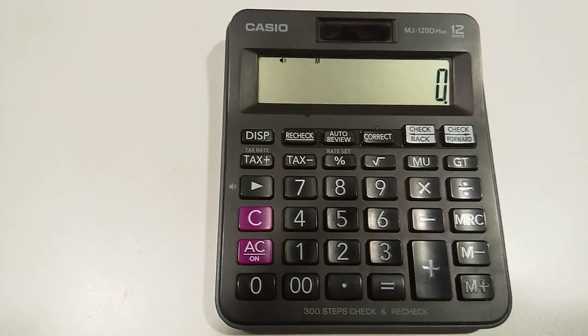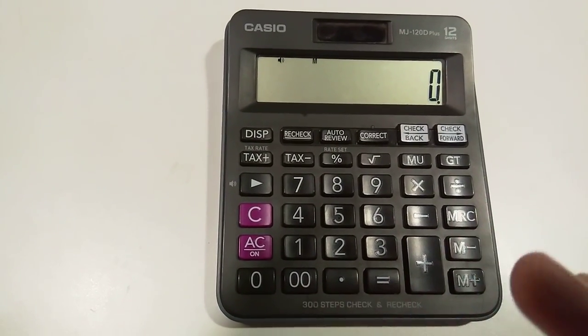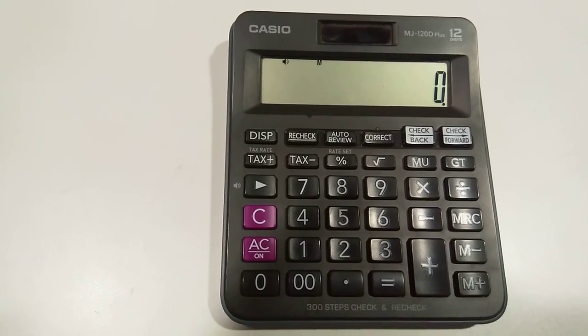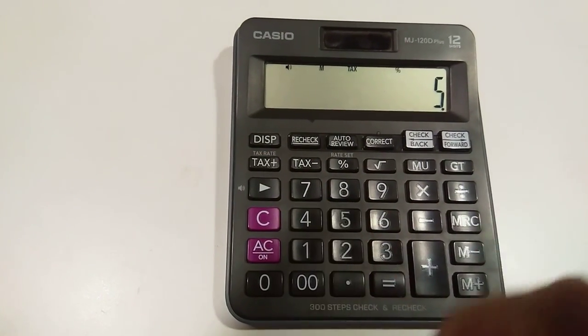So I will start. First of all, you want to know what is the value stored in your calculator as a tax rate. So I will press this button. You will see five. It means five percent is the tax rate in your calculator.